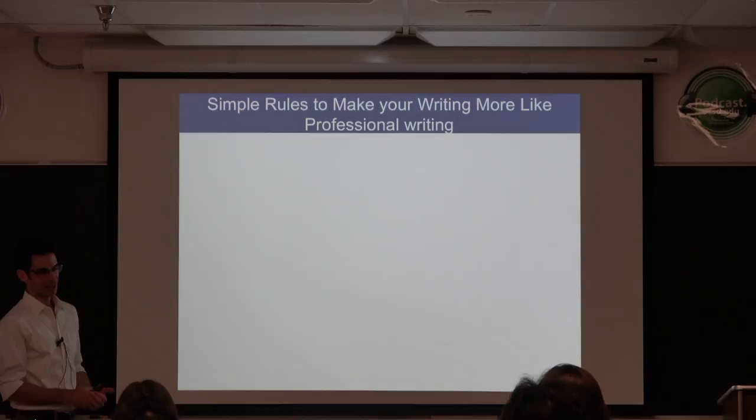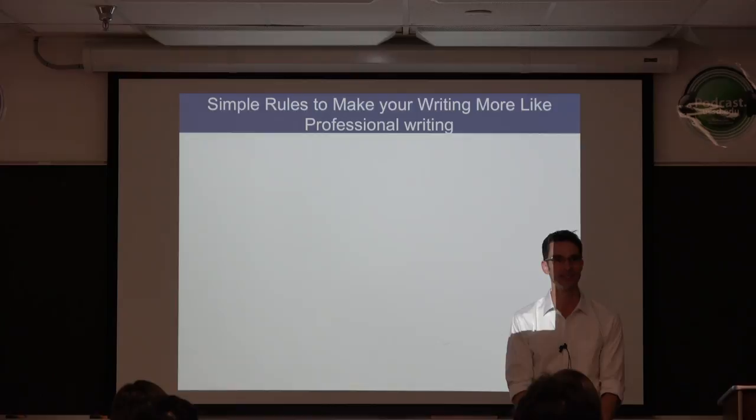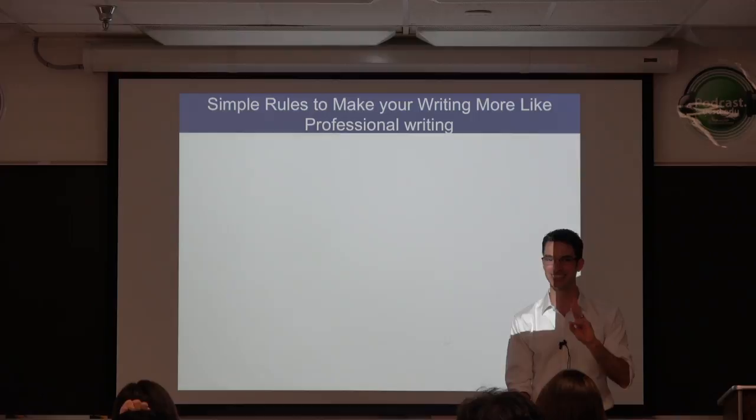Anthony Bourdain, the celebrity chef and travel writer, has a chapter in his book Kitchen Confidential on how to make your food more like restaurant food. There are only three rules: shallots, garlic, and butter. So what are the shallots, garlic, and butter of scientific writing?